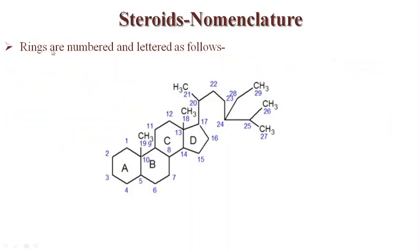Next we come to the nomenclature. The rings are numbered and lettered as follows: the four rings are labeled A, B, C, and D — A, B, C being six-membered and D five-membered. The numbering goes 1 through 17. Positions 18 and 19 are given to the angular methyl groups. If a side chain is present, it is numbered 20, 21, 22, 23, 24, 25, 26, 27, 28, and 29.